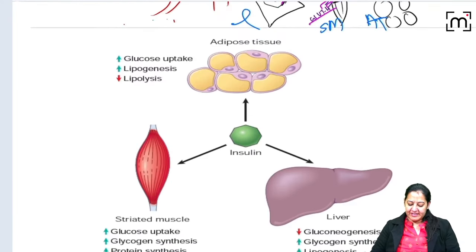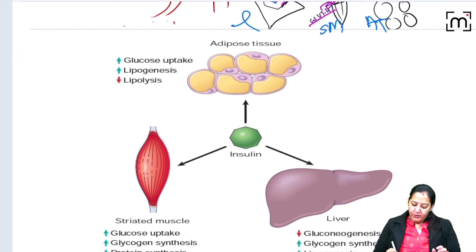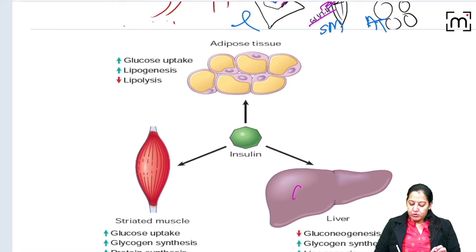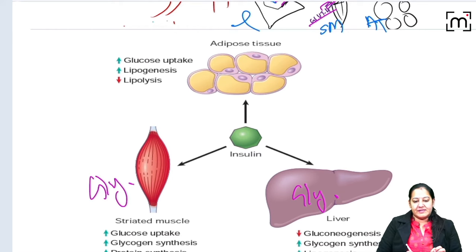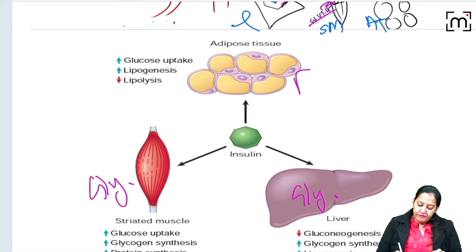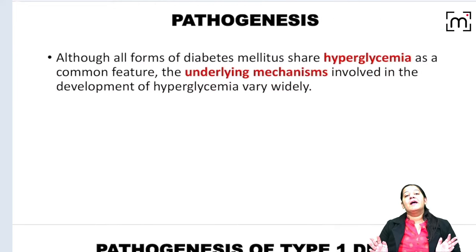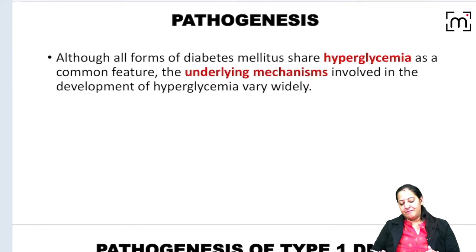Inside the liver, glucose is stored as glycogen. In skeletal muscle it is also stored as glycogen, and in adipose tissue it is stored as fatty acid.